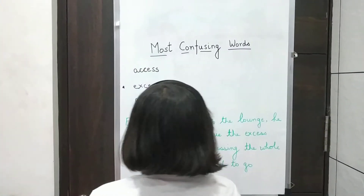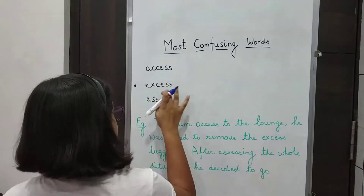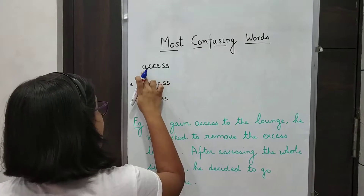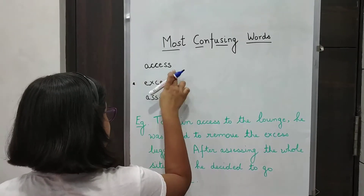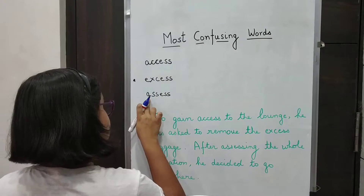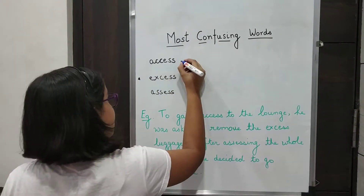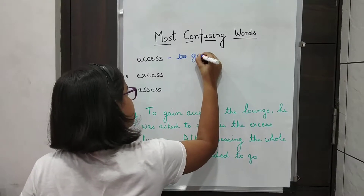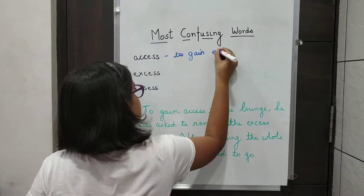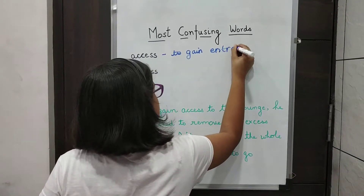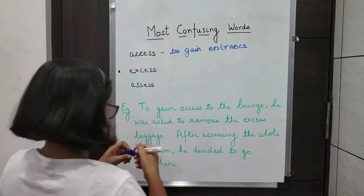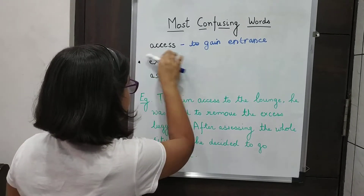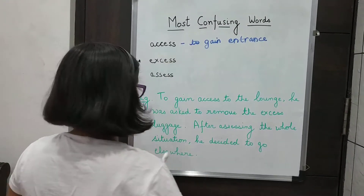Today we will discuss three words which are access, excess, and assess. The pronunciation of this is access. The meaning of access is to gain entrance. After he lost his key, he had no access to his room.